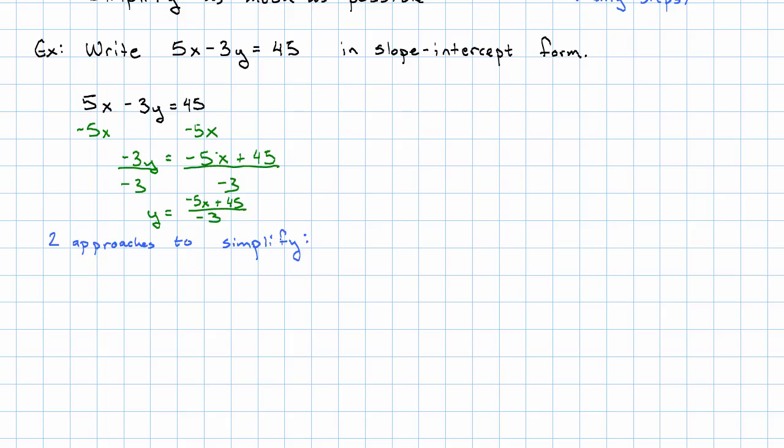There are two approaches I could take to simplifying this. I could rewrite the division as multiplication by the reciprocal. So here I'm dividing by negative 3. That's the same as multiplying by negative 1 third. And now I distribute. And I have negative 1 third times negative 5x plus negative 1 third times 45. And that works out to, you can use your calculator for this step if you'd like, 5 thirds x minus 15.